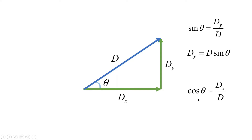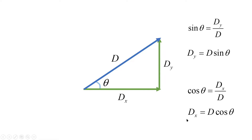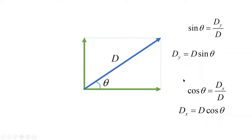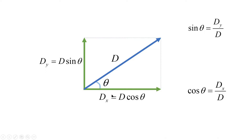We can also use cosine theta. Cosine theta is adjacent over hypotenuse, so it is DX over D. So we get DX equal to D cosine theta. So now we can clearly see that DX and DY are the components for vector D.